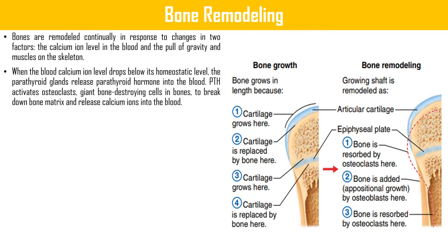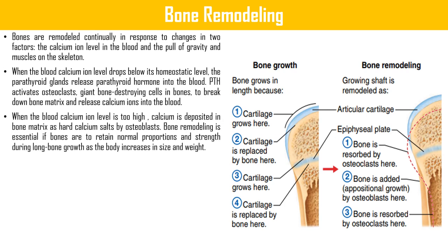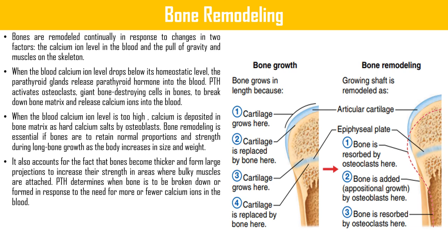Bone remodeling: bones are remodeled continually in response to changes in two factors — calcium ion levels in blood and the pull of gravity and muscles on the skeleton. When blood calcium ion levels drop below the homeostatic level, the parathyroid gland releases parathyroid hormone into the blood, which activates osteoclasts — giant bone-destroying cells — to break down bone matrix and release calcium ions. When blood calcium ion levels are too high, calcium is deposited in the bone matrix as hard calcium salt by osteoblasts.